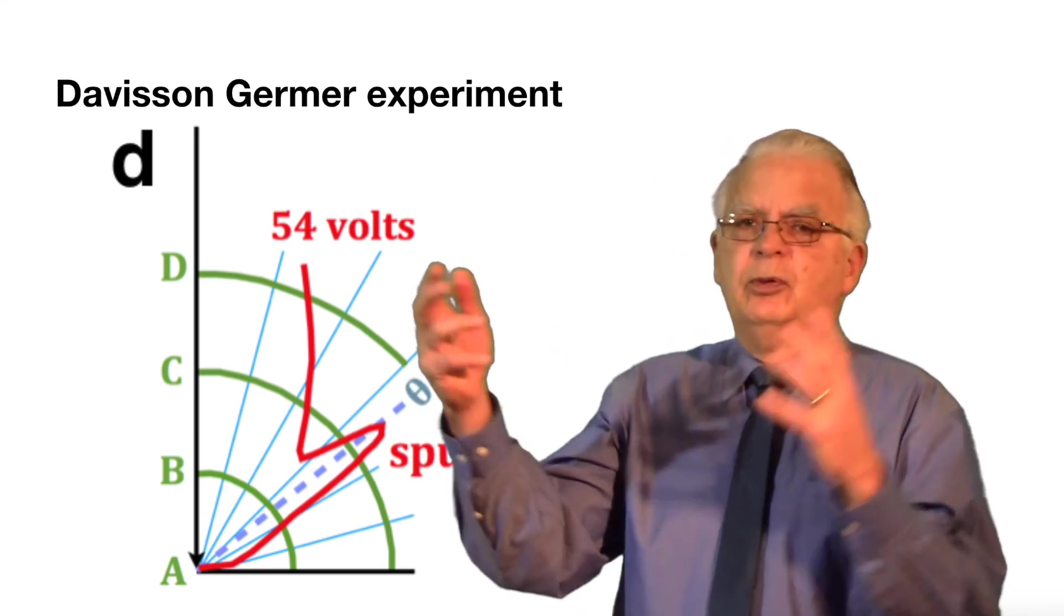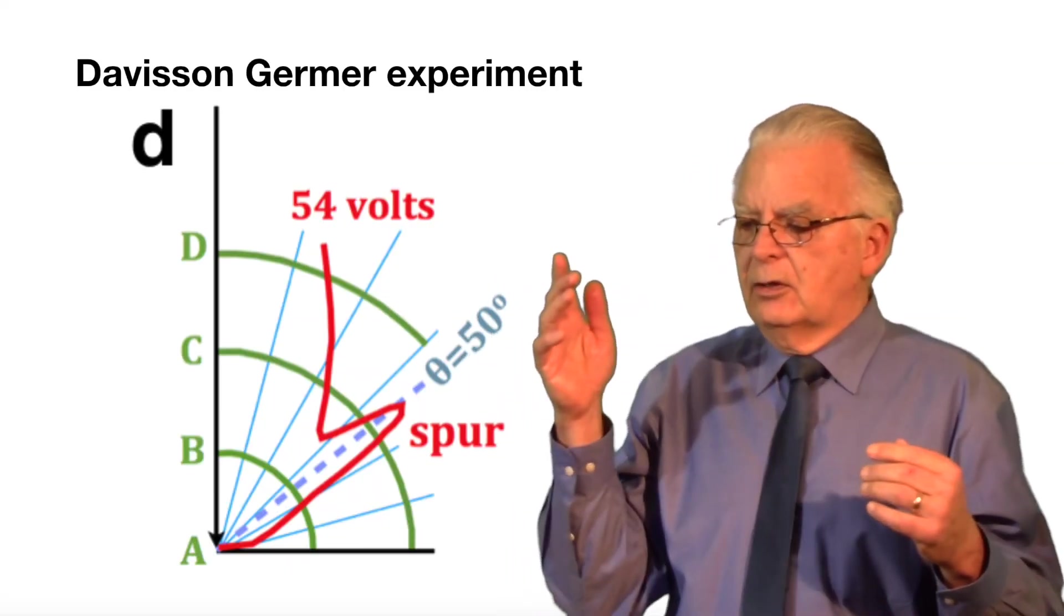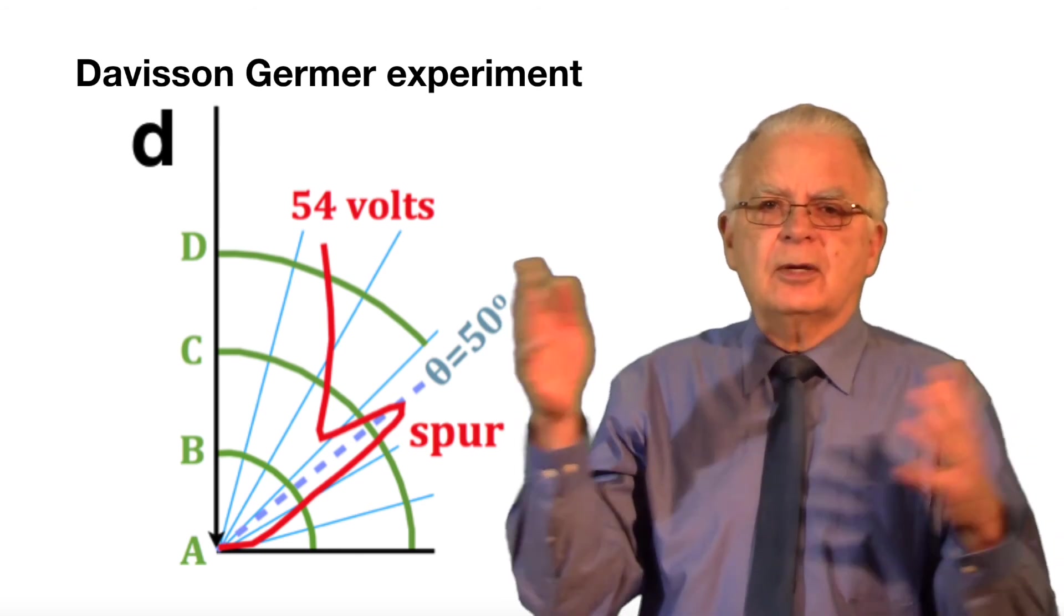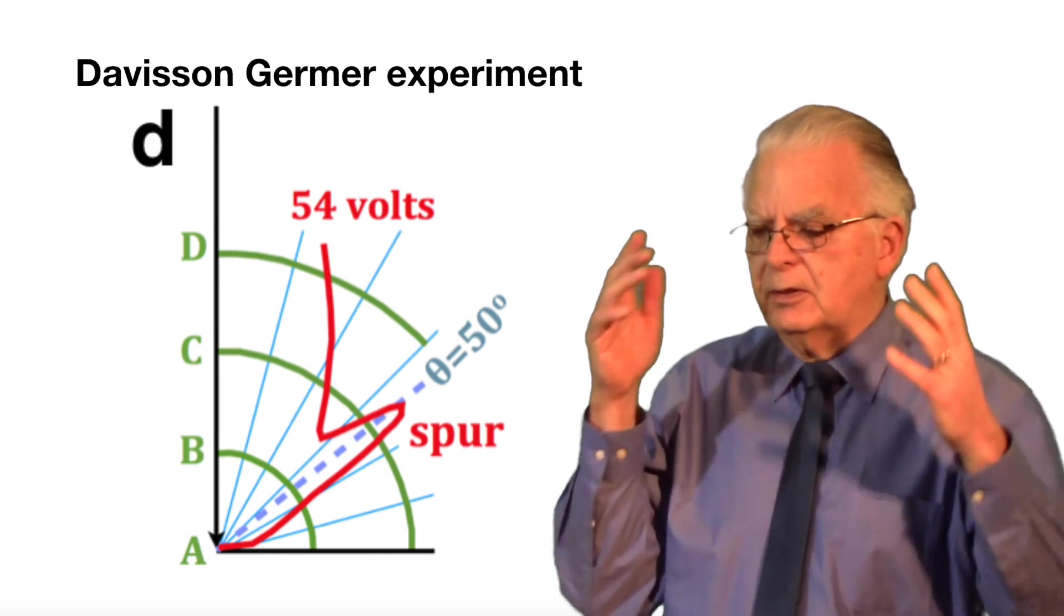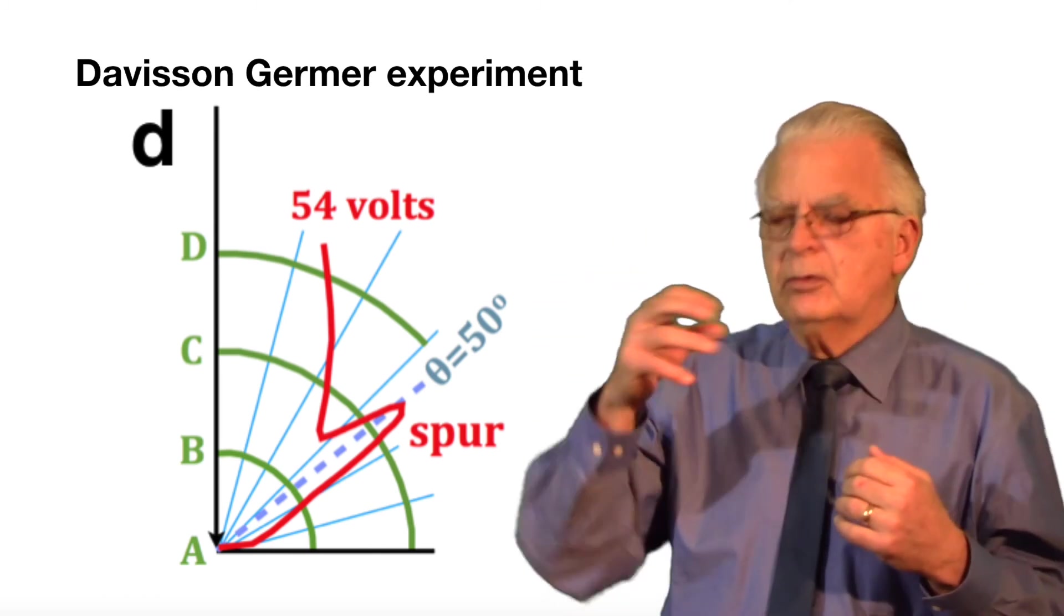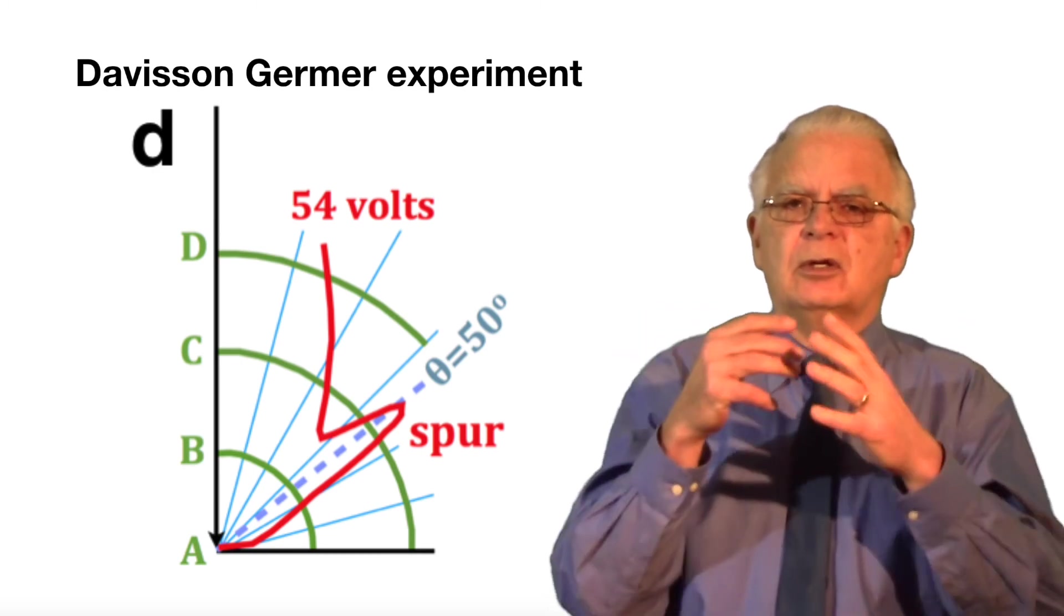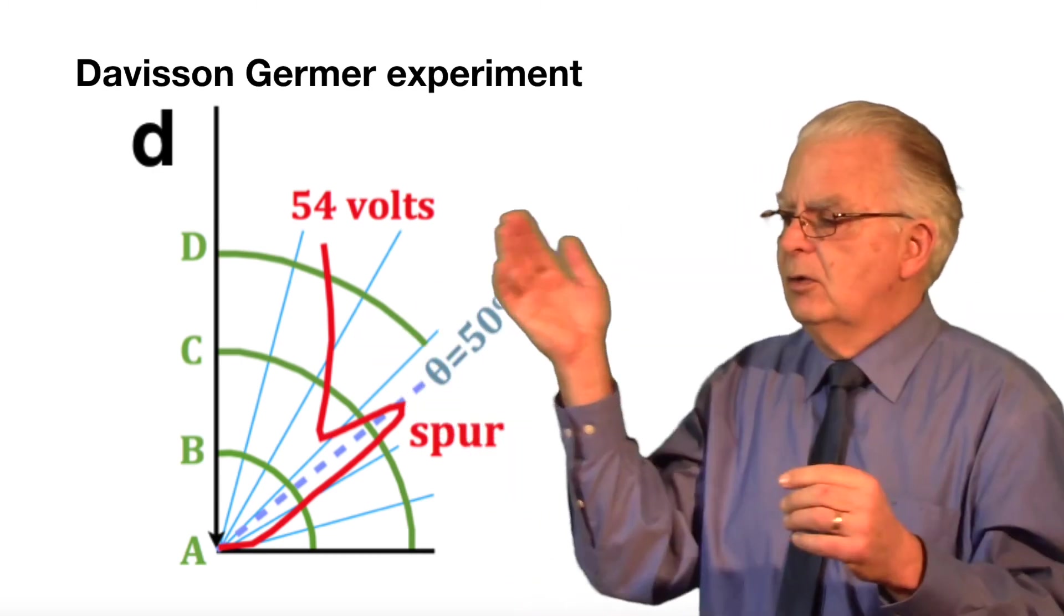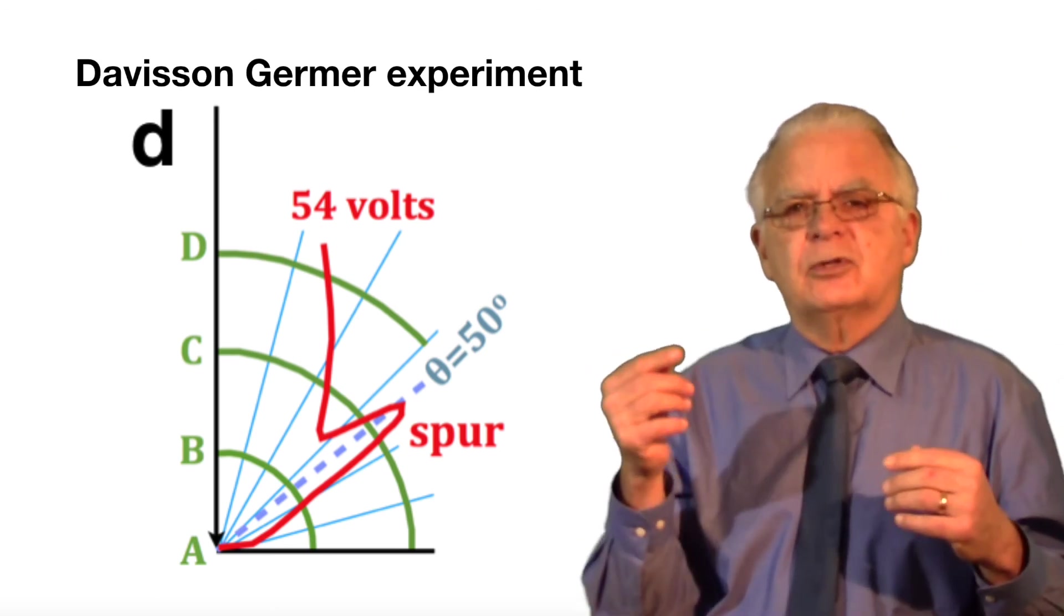And everybody said, well, that proves wave-particle duality. That spur proves it. But look at that spur. Do you see any evidence there that the waves and particles are going in the same direction? No, you can't tell which way the waves are going relative to the particles. And that's true of all the wave-particle duality experiments that have been done since then. They simply ignore the question whether the waves and particles are going in opposite directions.